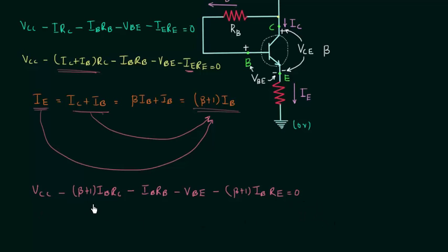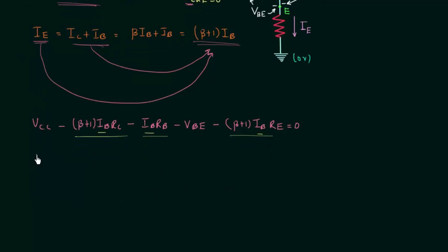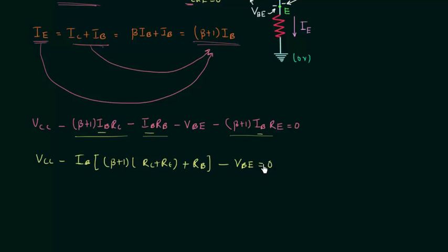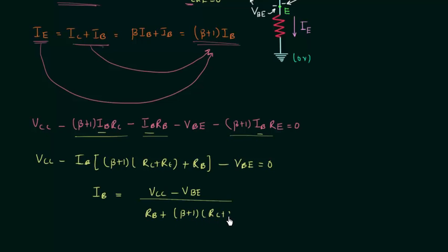Now in this equation the only unknown current is the base current IB. Taking IB common from the three terms, we get: VCC minus IB·[(β + 1)·RC + (β + 1)·RE + RB] minus VBE equals 0. So the base current IB equals VCC minus VBE, divided by RB plus (β + 1)·(RC + RE).